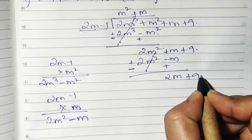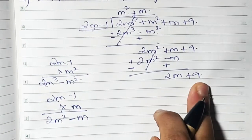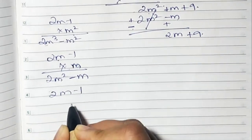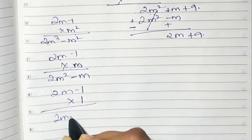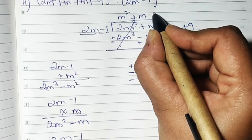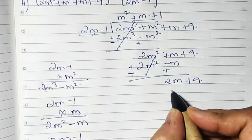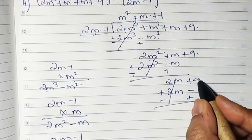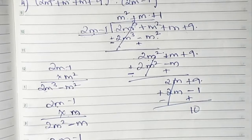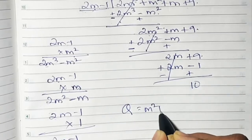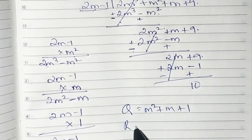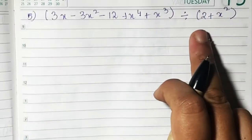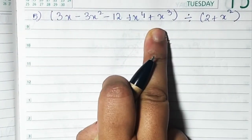Signs change: minus and plus. +2m² and -2m² cancel. We have 1m + 1m = 2m, plus 9. Now 2m - 1 and 2m + 9: multiply 2m - 1 by 1, giving 2m - 1. Change signs; we get 9 + 1 = 10 remaining. So the quotient is m² + m + 1 and the remainder is 10.